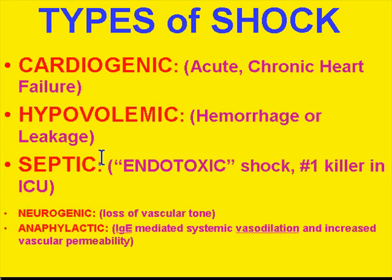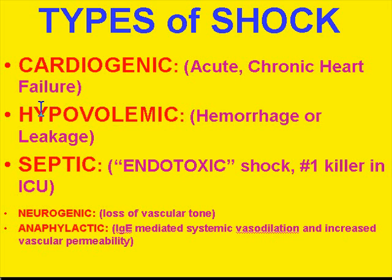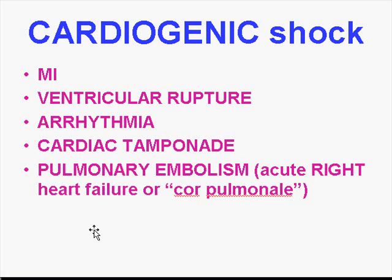The three main kinds of shock: cardiogenic shock can be acute or chronic; hypovolemic shock can be due to hemorrhage or fluid loss by other means; and endotoxic shock, also called septic shock, is generally the number one killer in the ICU. Additionally, neurogenic shock involves collapse of autonomic innervation of blood vessels with loss of vascular tone, and anaphylactic shock involves IgE-mediated generalized systemic vasodilation and increased total body vascular permeability — both often fatal as well.